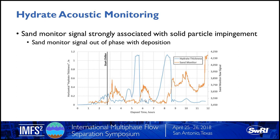We also used a sand monitor in the virtual long loop to detect onset of hydrate formation. Plotting sand monitor signal (orange) against hydrate thickness gauge (blue) over time revealed something interesting: when deposition processes were highest, the sand monitor signal was lowest. The reason: free hydrate particles are deposited into the walls instead of being transported around the loop in the slurry. So acoustic data can be out of phase with deposition—when particles are being deposited on the wall, transport of solid particles isn't occurring, and therefore the acoustic signal is lower.